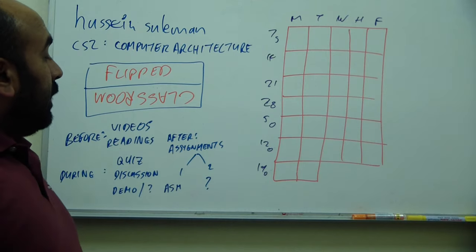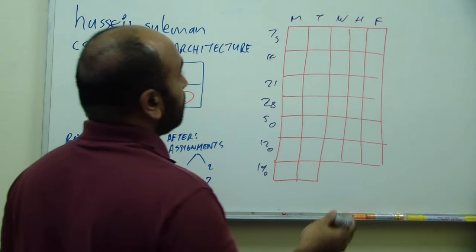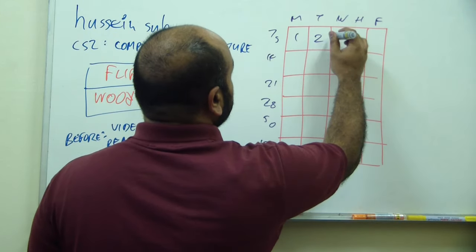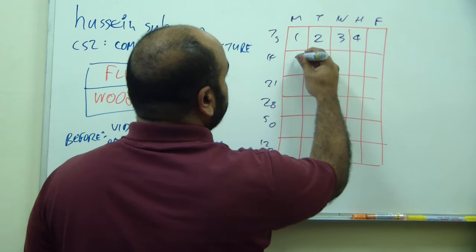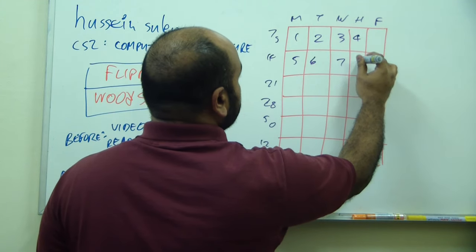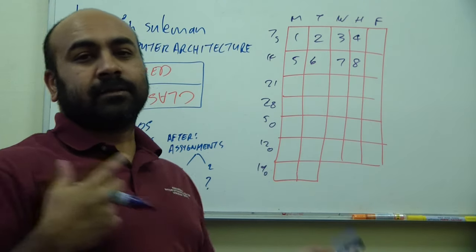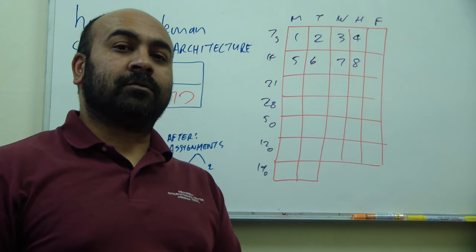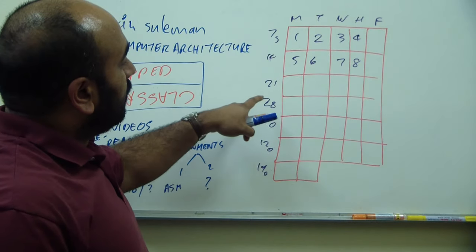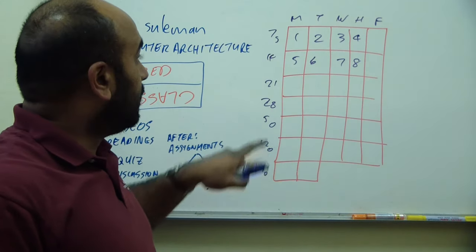So we have lectures on Monday to Thursday typically: 1, 2, 3, 4, 5, 6, 7, 8. Then we won't have lectures in computer architecture, but you will have lectures in the other section that you are currently doing with Dr. Junkies in the weeks of the 21st and the 28th of September.